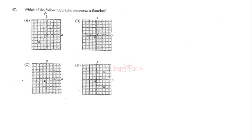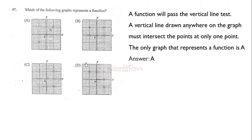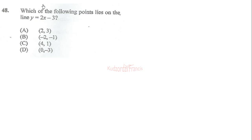Item 47 asks which of the following graphs represents a function. For a graph to be a function, it must pass the vertical line test — draw a vertical line anywhere on the graph and it must pass through only one point. Applying this test, option A is the only graph that satisfies the condition, so the correct answer is option A.